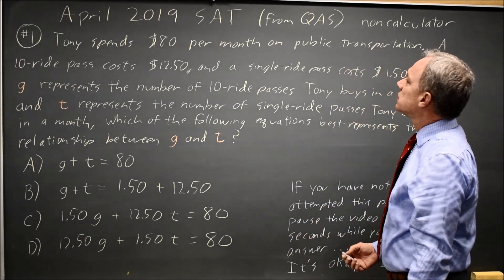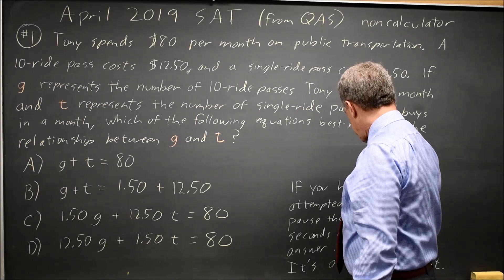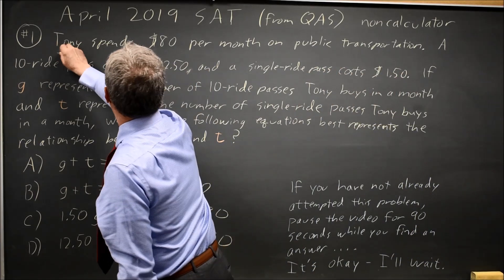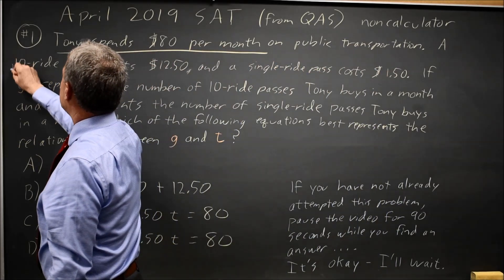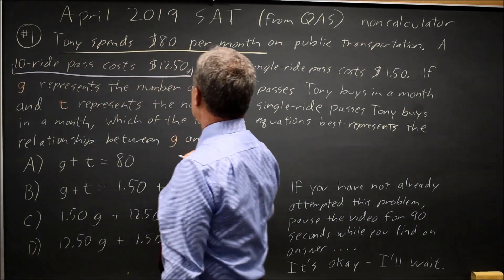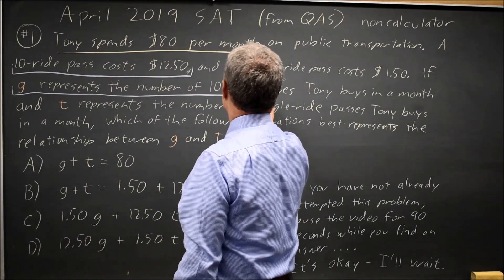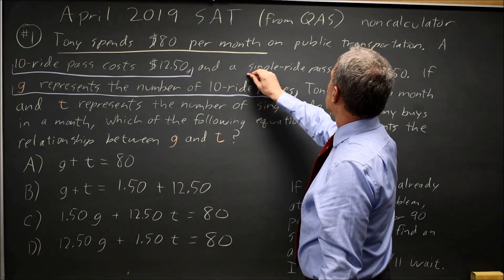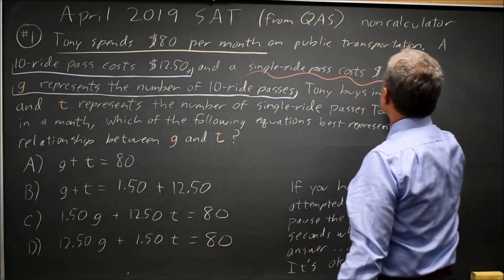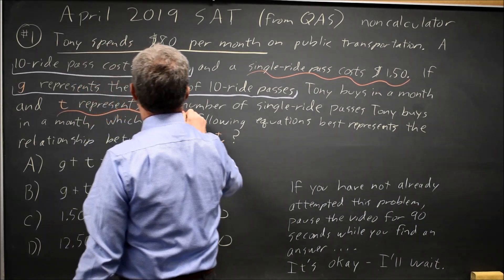Okay, let's look at this problem. Tony spends $80 per month on public transportation. Ten ride passes cost $12.50, and G represents the number of ten ride passes. Single ride passes cost $1.50, and T is the number of single ride passes.